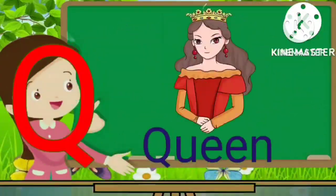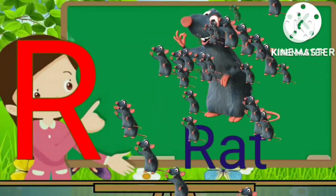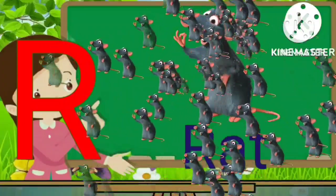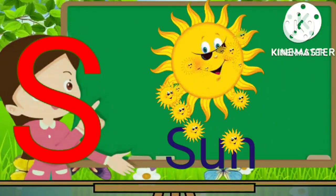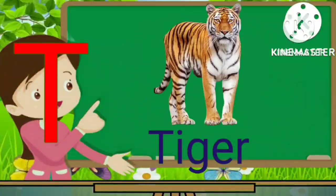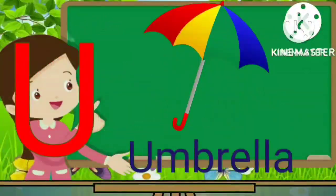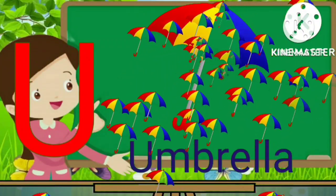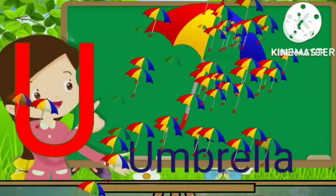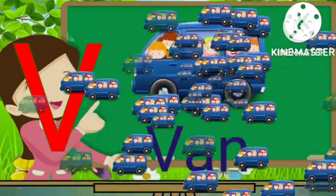P for pirate. Q for queen. R for right. S for sun. T for tiger. U for umbrella. V for one.